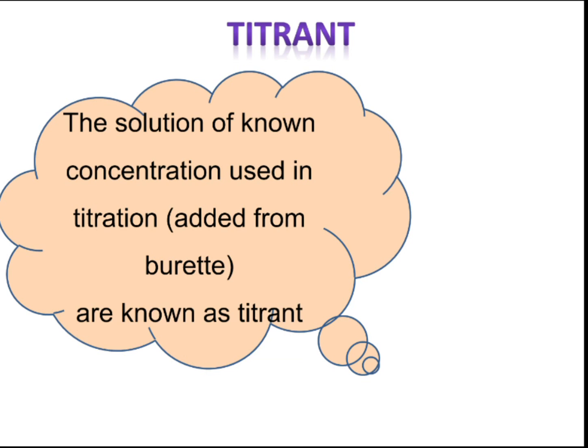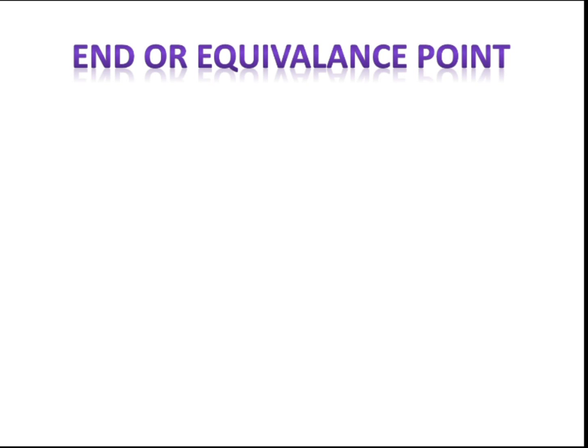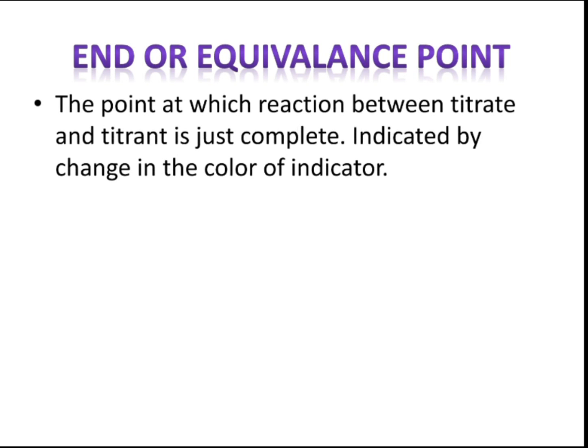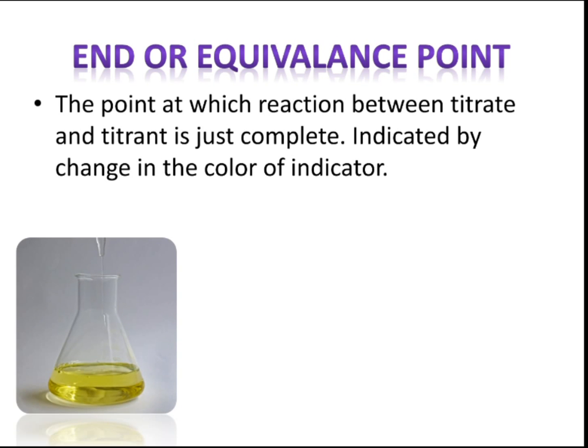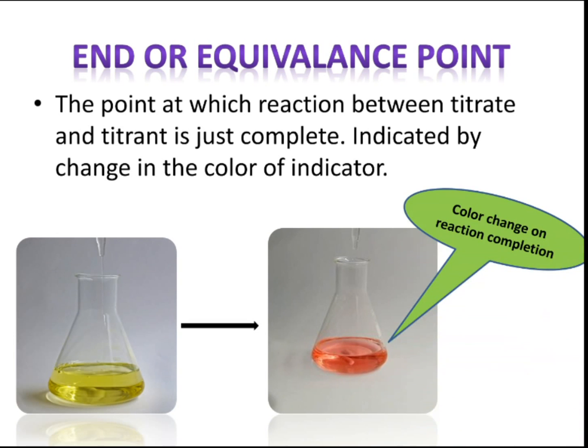Titrant is the solution of known concentration used in titration, which is added from a burette. The end point or equivalence point is the point at which the reaction between the titrate and titrant is just complete, indicated by a change in color of the indicator. For example, after titration, the color of the substance changes due to reaction completion.